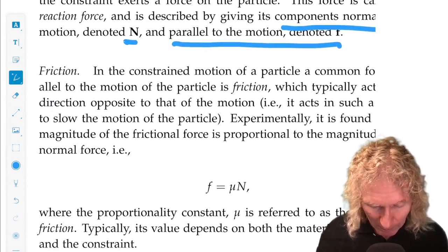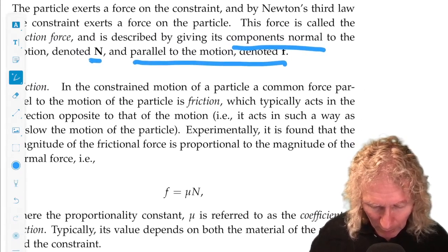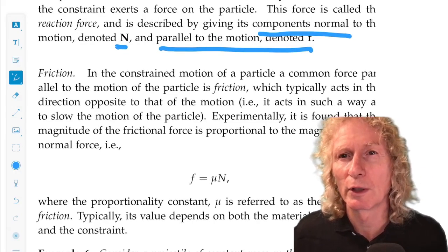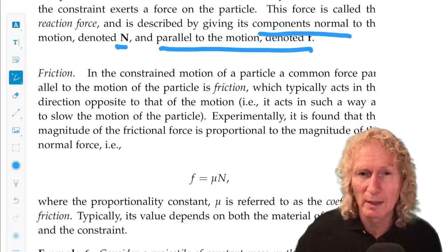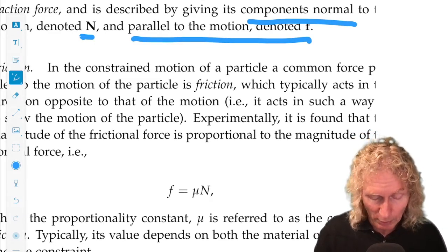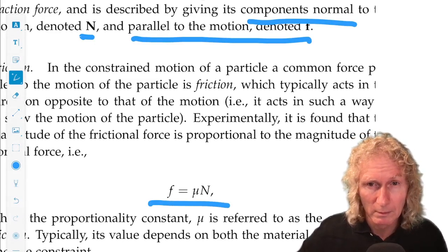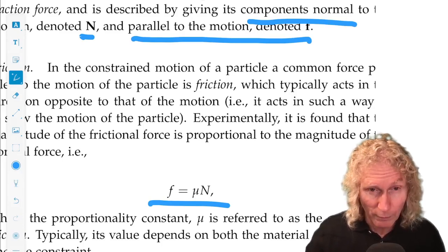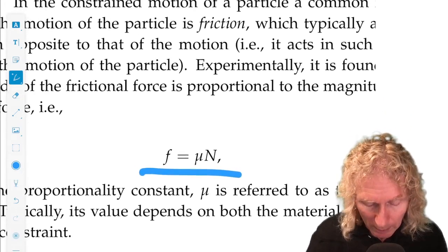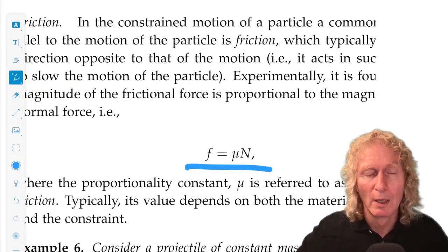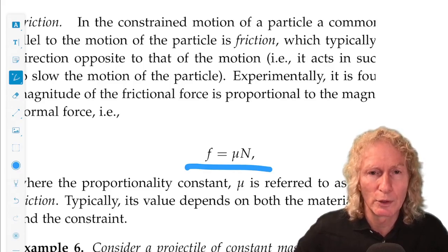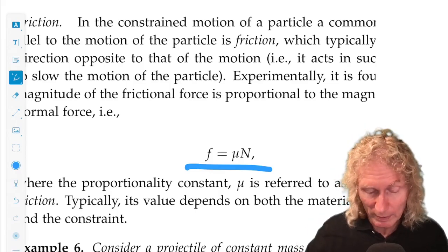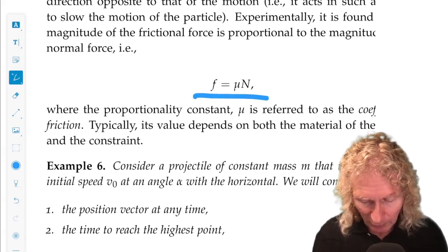Friction. In a constrained motion of a particle, a common force parallel to the motion of the particle is referred to as friction. And that generally tends to act in an opposite direction to the motion of the particle. And the magnitude of the frictional force empirically obeys this law. It's proportional to the normal force. The proportionality constant is called mu, the coefficient of friction. And this works pretty well in a lot of cases, but friction is a very complicated force that we don't really understand entirely yet, but that's a subject in its own right.